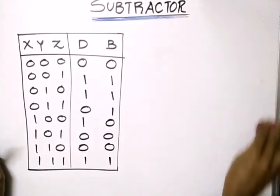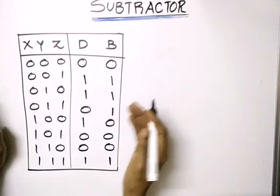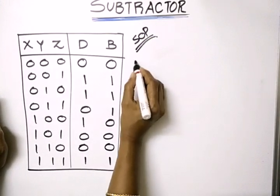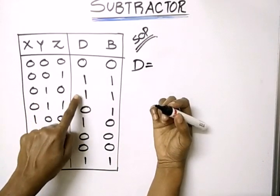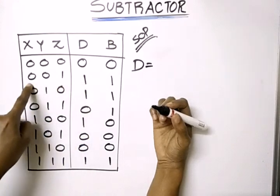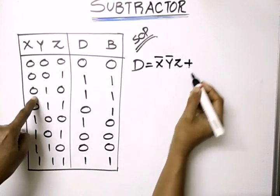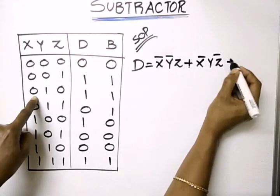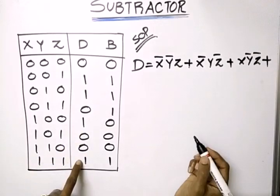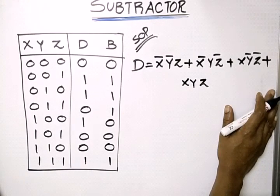Now we have to write the corresponding expressions for difference and borrow. We can write either SOP, POS, or simplify using Karnaugh map. Writing the SOP expression for difference: D equals 1 for the rows where difference is 1. The corresponding product terms are X̄ Ȳ Z, or X̄ Y Z̄, or X̄ Y Z, or X Y̅ Z̄, or X Y Z. This is the canonical SOP expression for the difference.